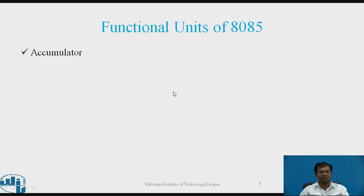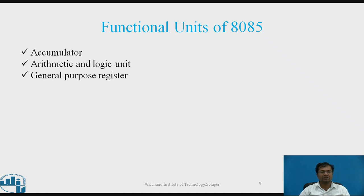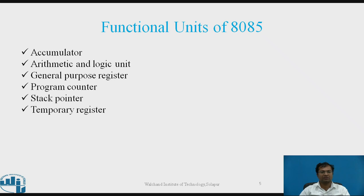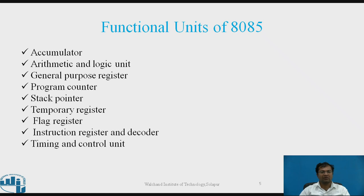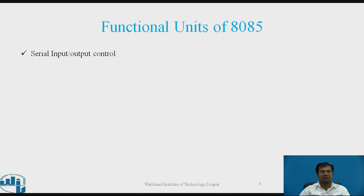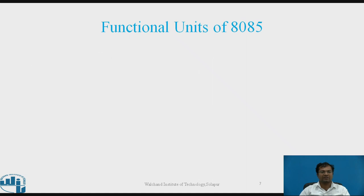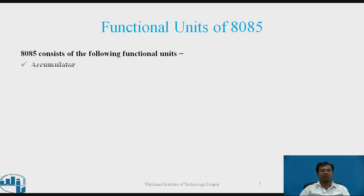Let's have a glance at the functional units of microprocessor 8085. It has an accumulator, arithmetic and logic unit, general purpose registers, program counter, stack pointer, temporary register, flag register, instruction register and decoder, timing and control unit, interrupt control, serial input-output control, address buffer, address/data buffer, address bus, and data bus.